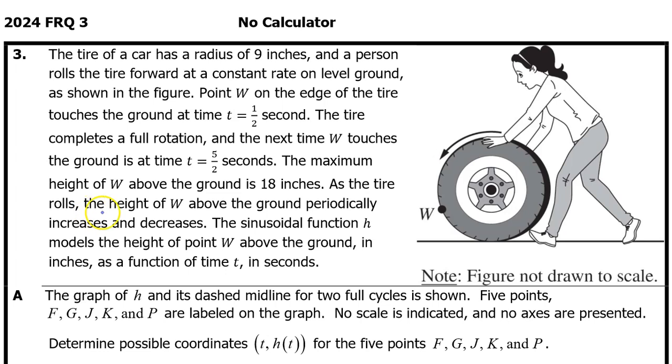The maximum height of W above the ground is 18 inches. As the tire rolls, the height of W above the ground periodically increases and decreases. The sinusoidal function h models the height of point W above the ground, in inches as a function of time, in seconds.